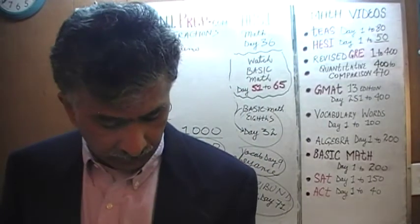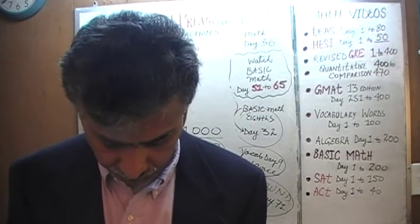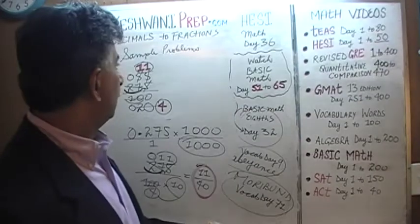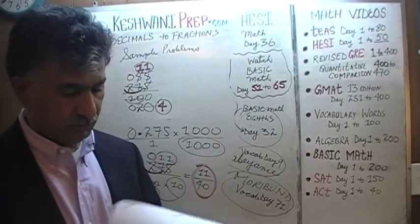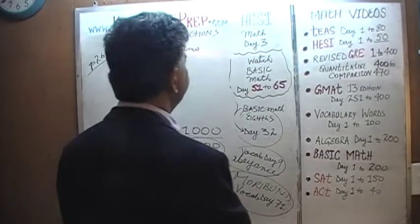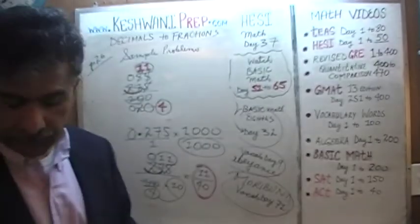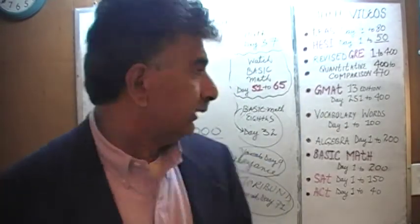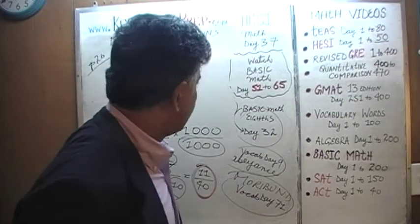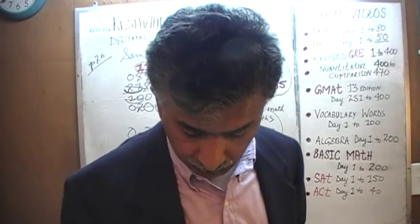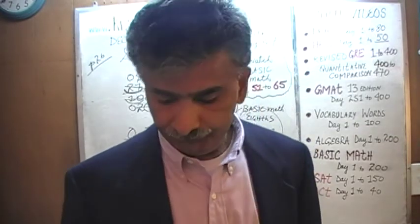And that was the end of this topic. The next topic is ratio and proportions — we'll start that tomorrow. Today is lesson number 37. Tomorrow — day 38 — we'll begin ratio and proportions, with 3 lessons on it: days 38, 39, and 40. Then we'll move on and see what comes next. Bye now.